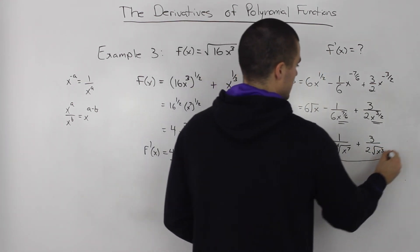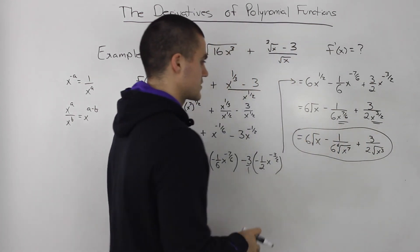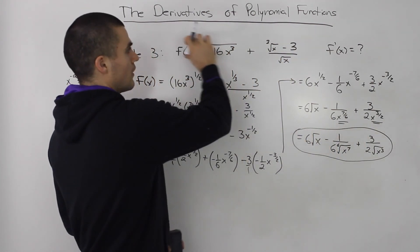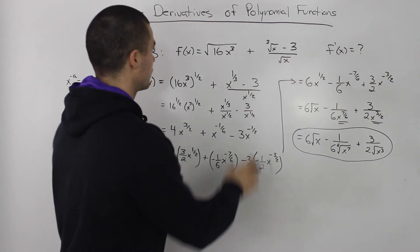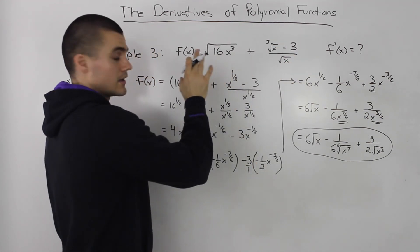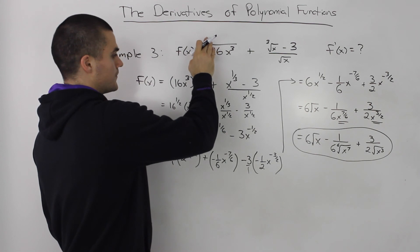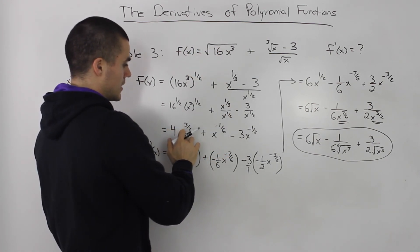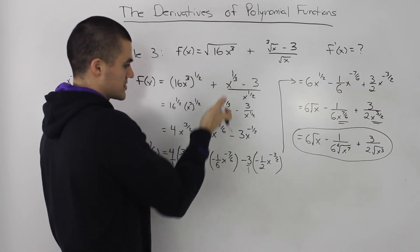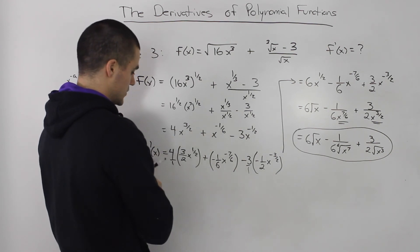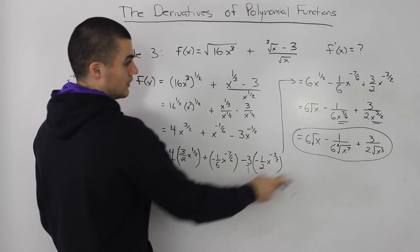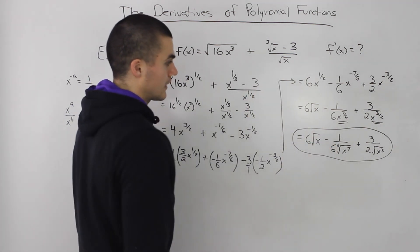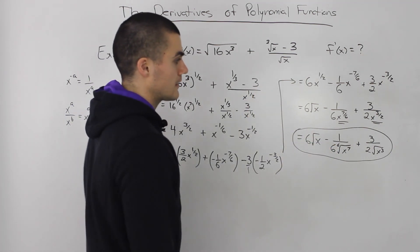So this is our final answer — the derivative of the original function. As a recap: take the function, simplify it, put it in exponent form, bring all the exponents up, take the derivative using the power rule, and then switch it back to radical form.